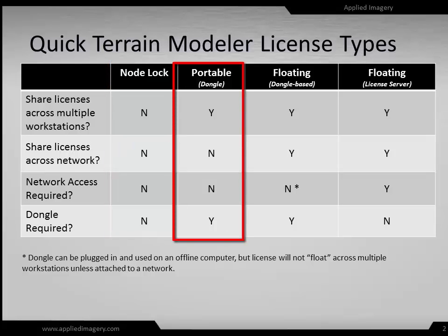Portable licenses use a licensed dongle, which is a USB license key. This dongle can be shared across multiple workstations but must be plugged in locally to the machine running Quick Terrain Modeler. Portable licenses cannot be shared across a network, nor do they require network access. They are a convenient way to share licenses when users are on separate networks, when users travel, or work from different facilities — the dongle can be carried around and used on any workstation.